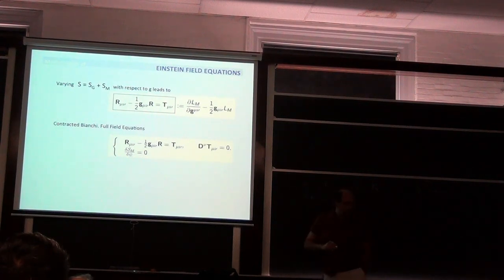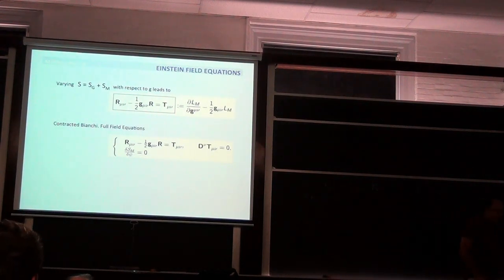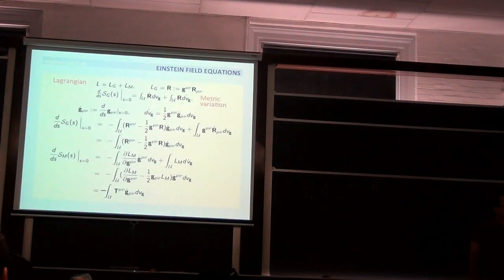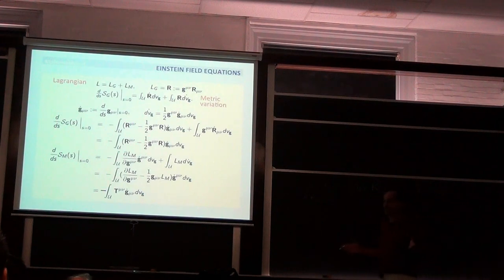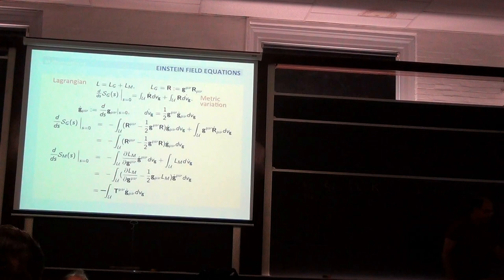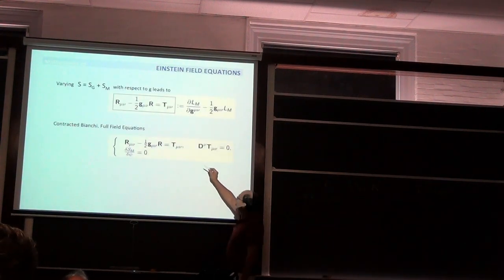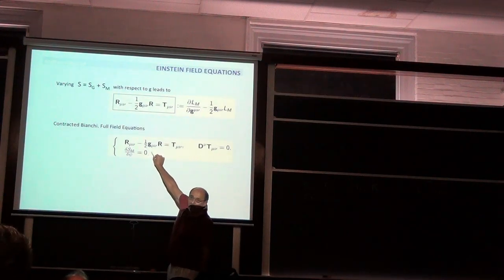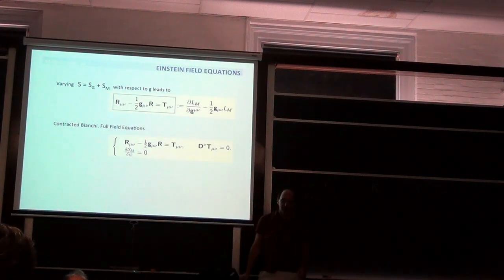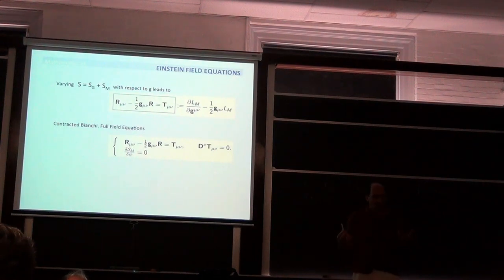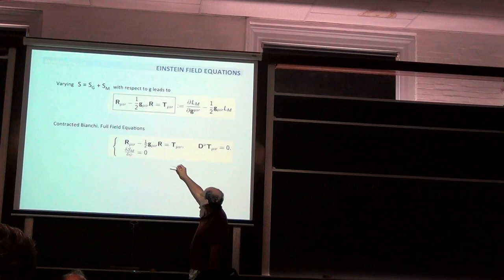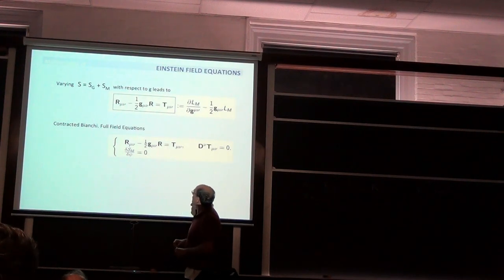We only did the variation with respect to the metric G. That's not complete — you should do the variation with respect to both the metric and the fields together. When you do that, in addition to the Einstein equations, you also get all the Euler-Lagrange equations of the matter. So you get a coupled system between the Einstein equations and the matter field equations.